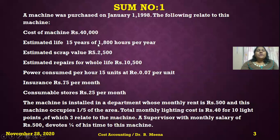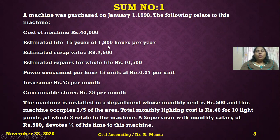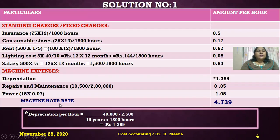We use these three pieces of information to calculate depreciation per hour. The formula is: cost minus scrap value divided by estimated life in hours. So, (40,000 − 2,500) ÷ (15 years × 1,800 hours) = 1.389 rupees per hour — that is the depreciation per hour.